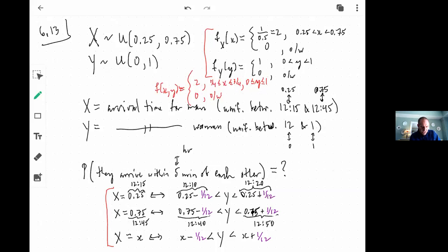So basically, we wanted the probability that they will arrive within five minutes of each other. And really, five minutes is the same thing as one twelfth of an hour. Because everything that we've done here is in the units of an hour. And so that's what we wanted. And the main observation is this.